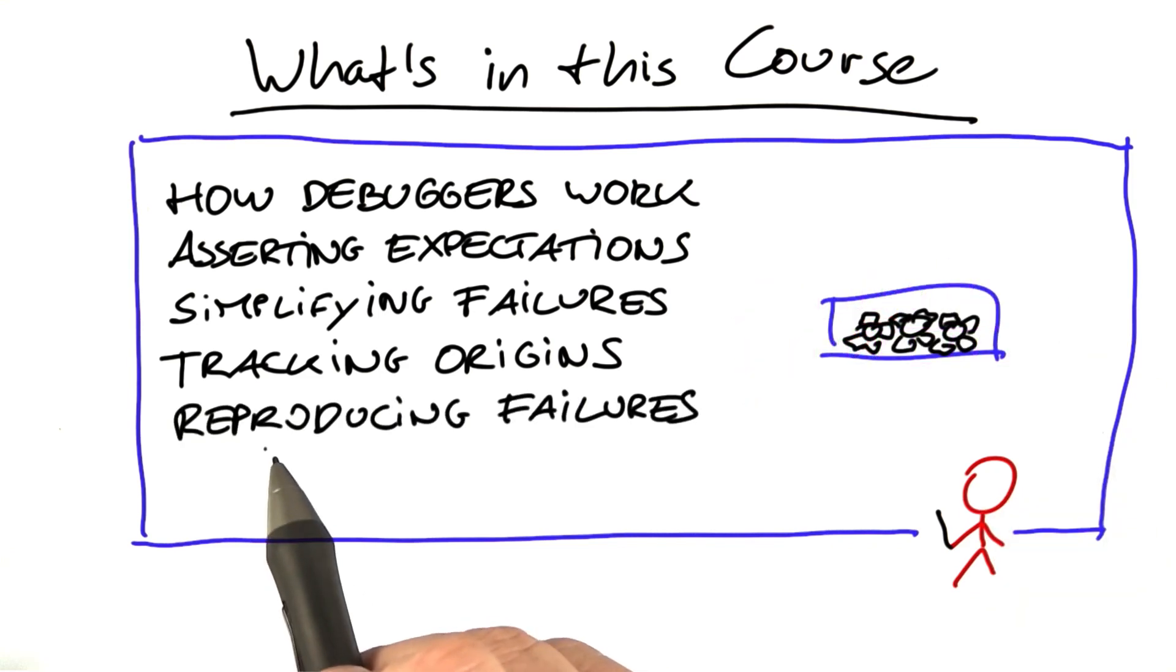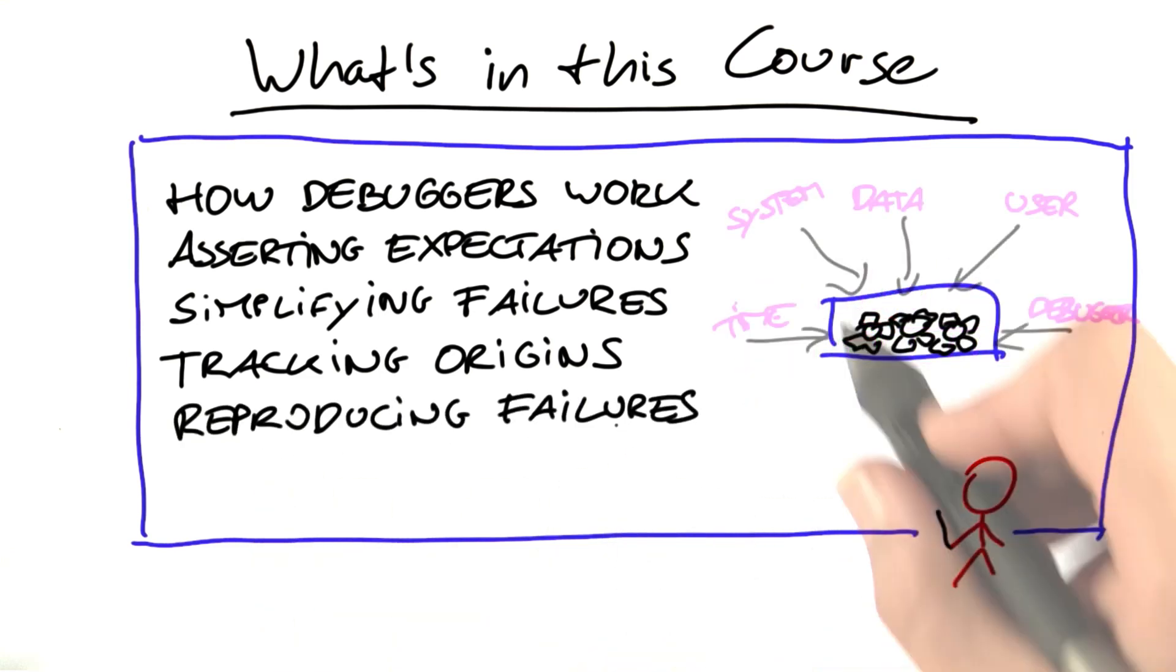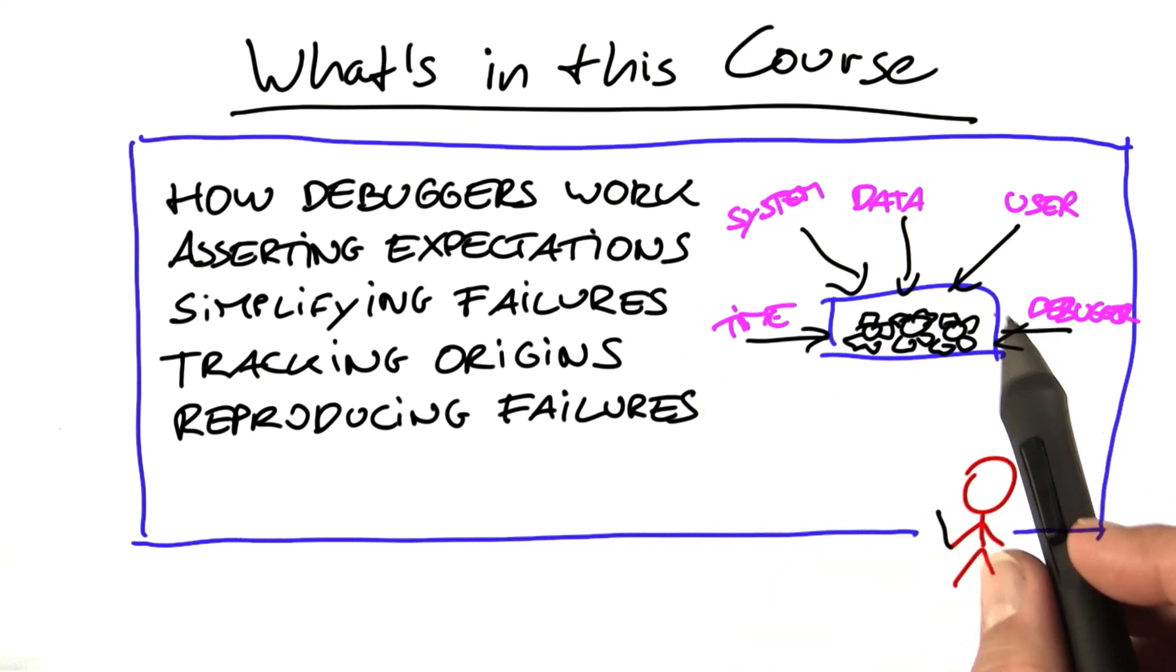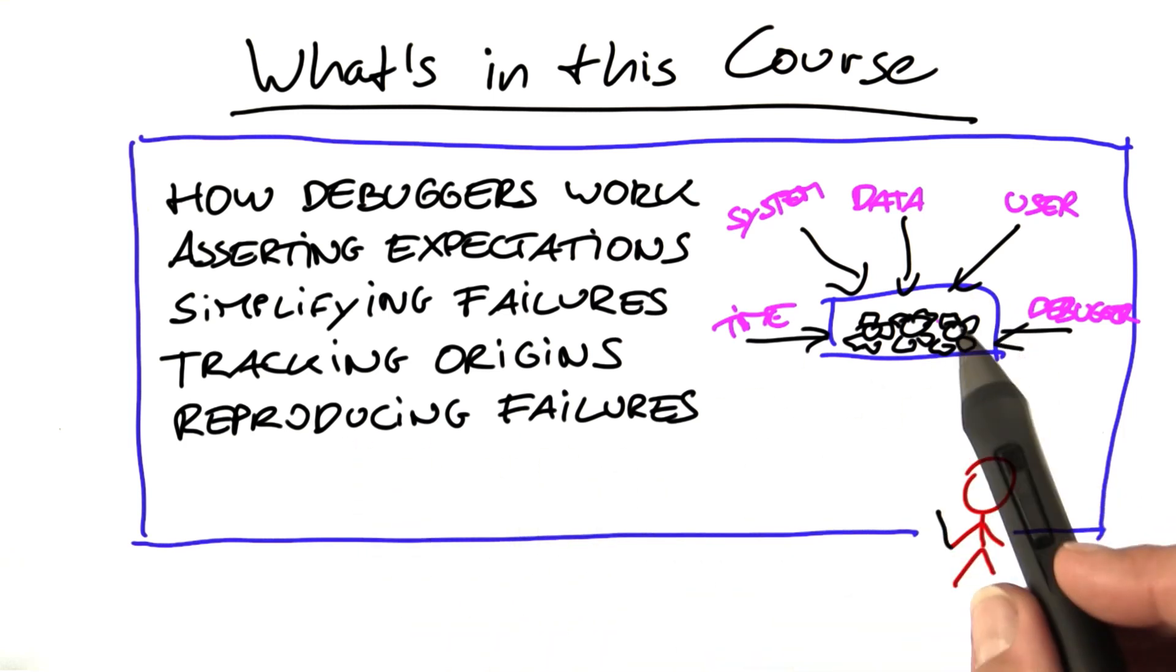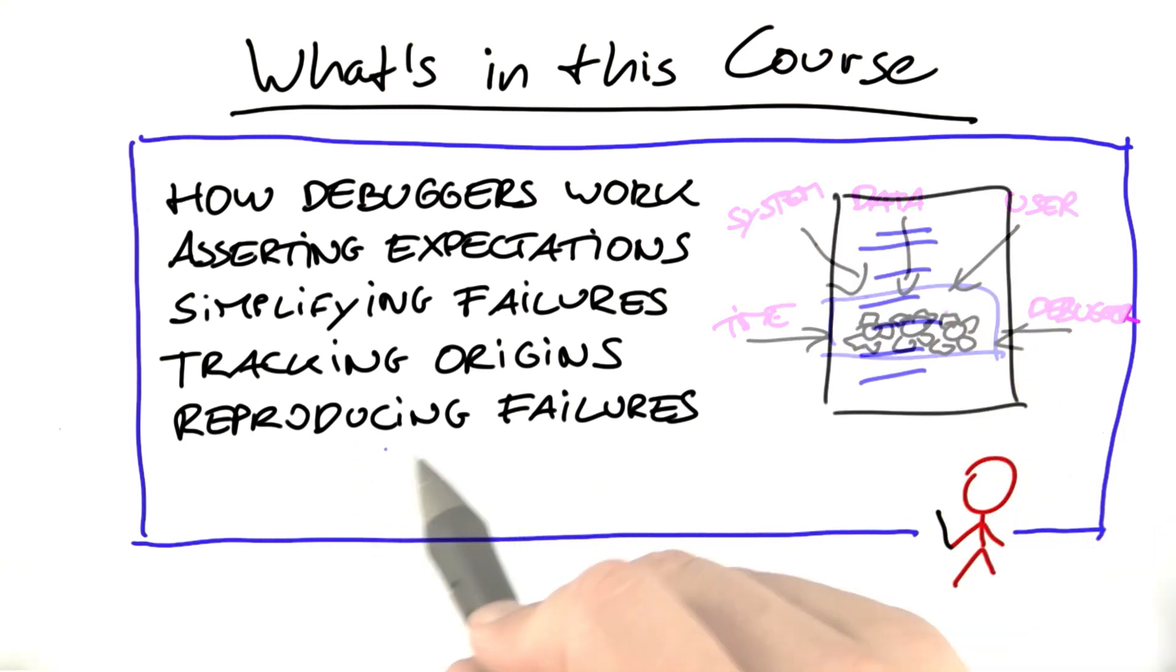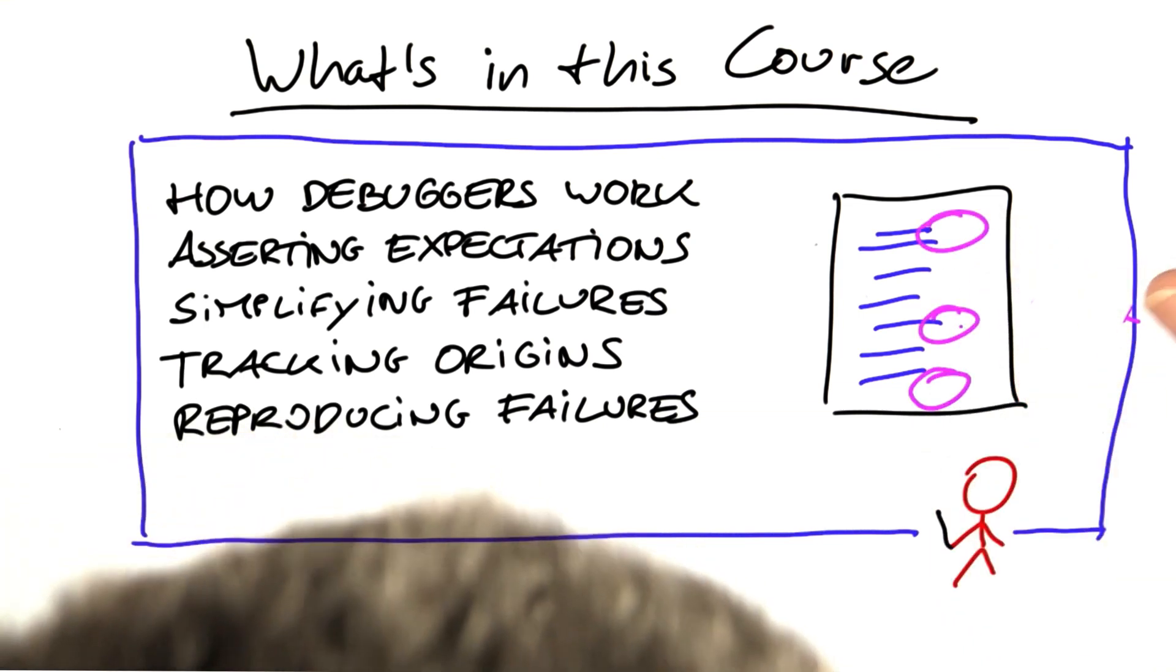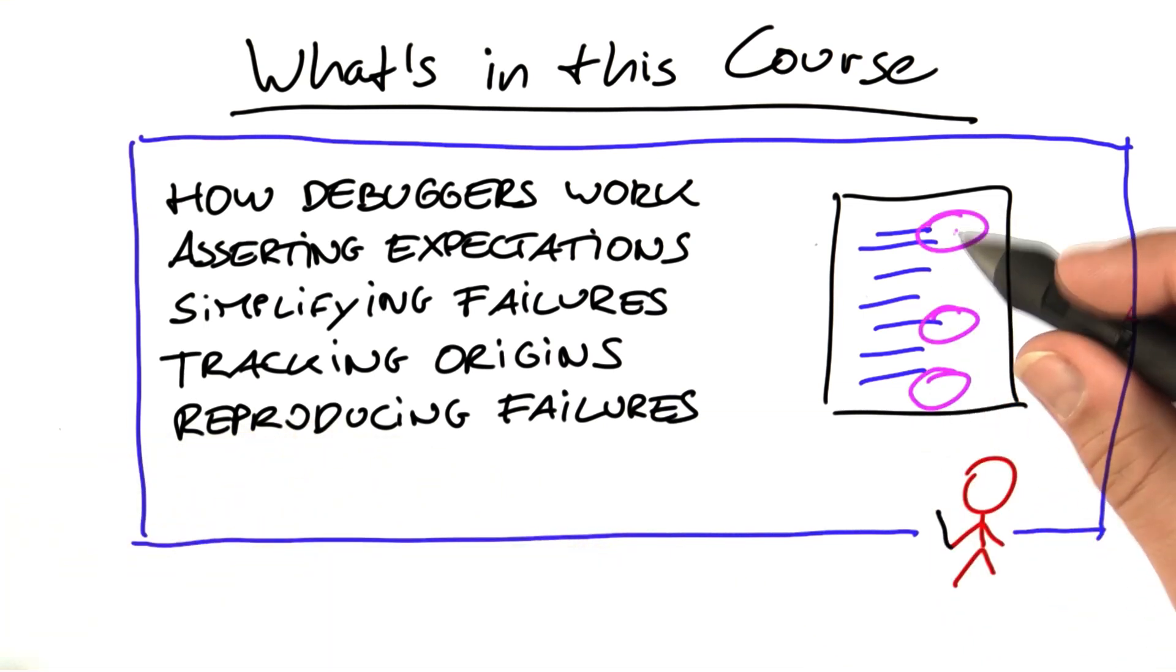In unit 5, we'll be looking at reproducing failures. We're going to look at all the various input sources for your program and discuss how to capture and replay them, such that you can faithfully reproduce a failure that happens in the field. Plus, we're going to explore statistical debugging, which collects data from the field to tell you which parts of your program are most likely to be related to the failure.